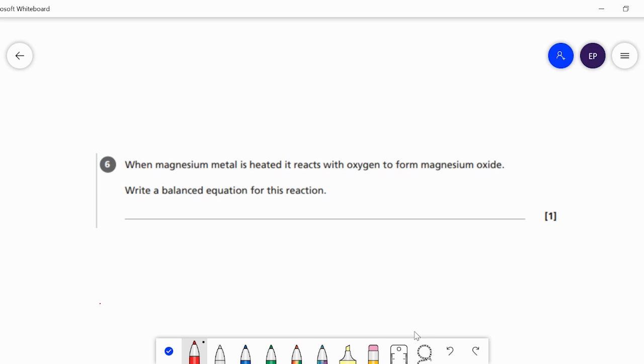Let's start by writing a word equation: magnesium reacts with oxygen to form magnesium oxide.